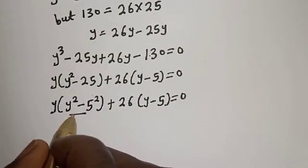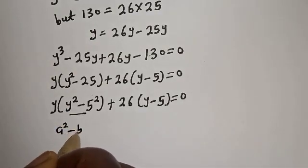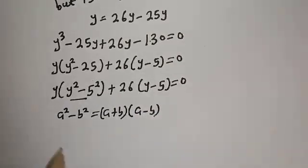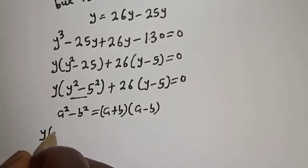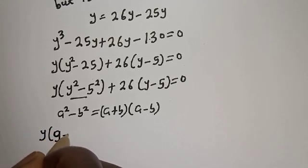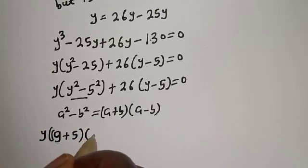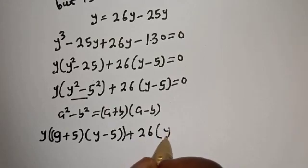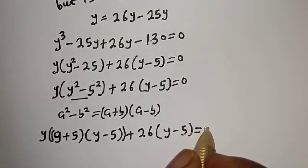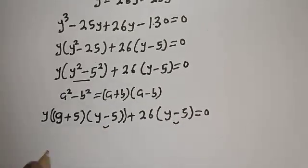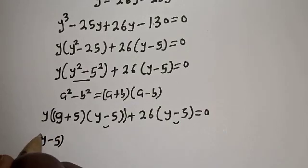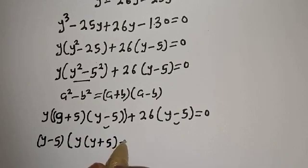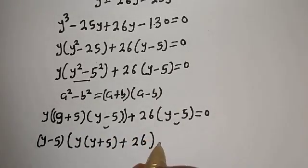If you look at this, this is a difference of two squares: a squared minus b squared is equal to a plus b multiplied by a minus b. So we get y bracket y plus 5 multiplied by y minus 5, plus 26 bracket y minus 5 is equal to 0. And y minus 5 is common — let's factor it out. y minus 5 bracket y times y plus 5 plus 26 is equal to 0.